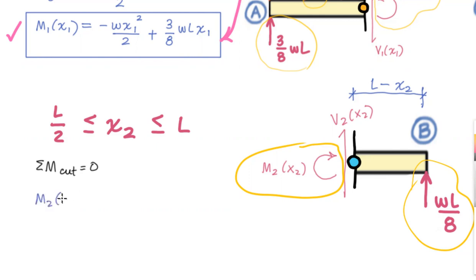First term m sub two, function of position x sub two, that one is clockwise negative. Next term w l over eight, distance l minus x sub two, that sign is a tendency to rotate counterclockwise positive, set that equal to zero. Now we rearrange our equation to get it in the conventional form. So I'll put m sub two x sub two on one side. And on the other side, I'll have w l over eight. And I'll go ahead and expand this as I go. So that would be a w l squared over eight minus w l x two over eight.